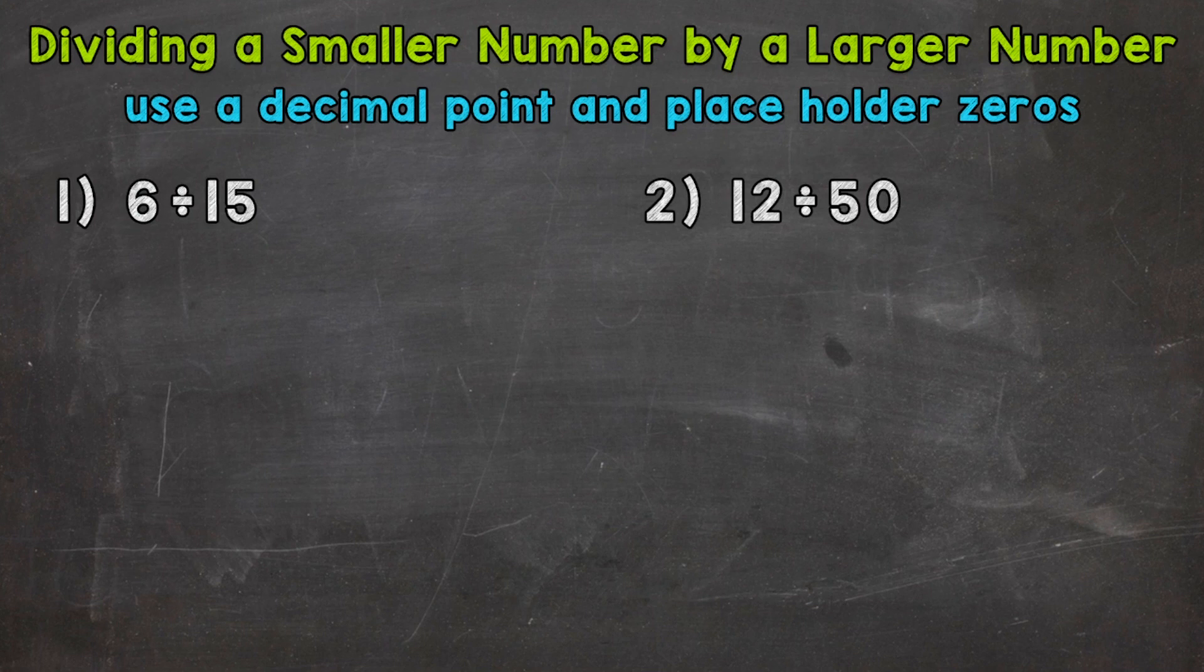So for number one, we have 6 divided by 15. And the first thing we want to do is set this problem up. Don't worry about which number is larger in value or smaller in value. That has nothing to do with how we're going to set this division problem up. We need to take a look at the order of the problem and what this problem means.